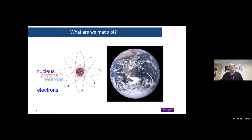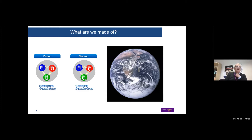Let me start completely generically. We all know — and CERN is of course the place where a lot of this has been studied — that the world as we know it is made up of atoms. In the center of the atom is a nucleus consisting of protons, neutrons, and electrons. Looking deeper into the proton and neutron, we know they are made of quarks — up and down quarks — two up and one down, or one up and two down quarks.